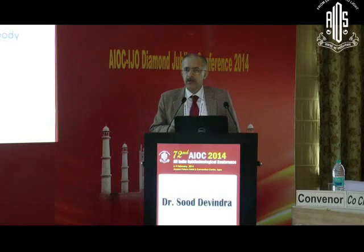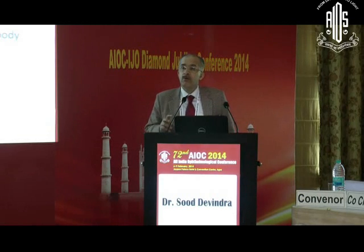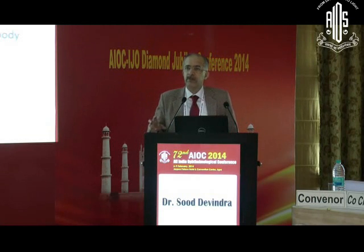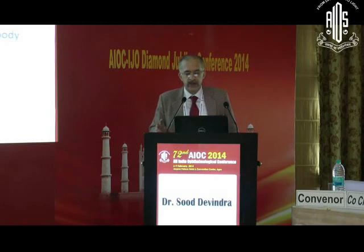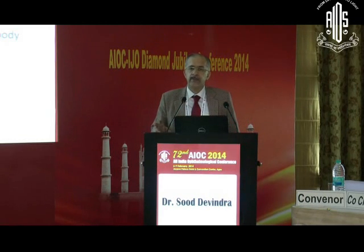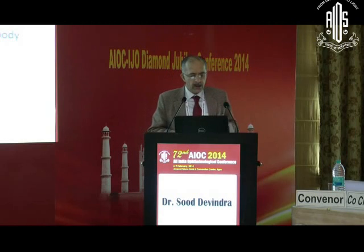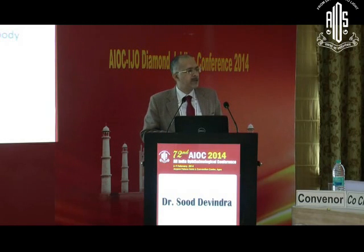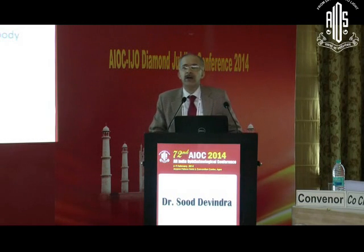What does comorbidity mean to us in the context of glaucoma? It could be glaucoma in association with a systemic disease. If you look at an autoimmune disease like juvenile rheumatoid arthritis, 80% of such patients will have an anterior uveitis, and 15 to 30% of those will go on to develop glaucoma. With infectious diseases like congenital rubella, 2 to 15% of patients will actually go on to have glaucoma.